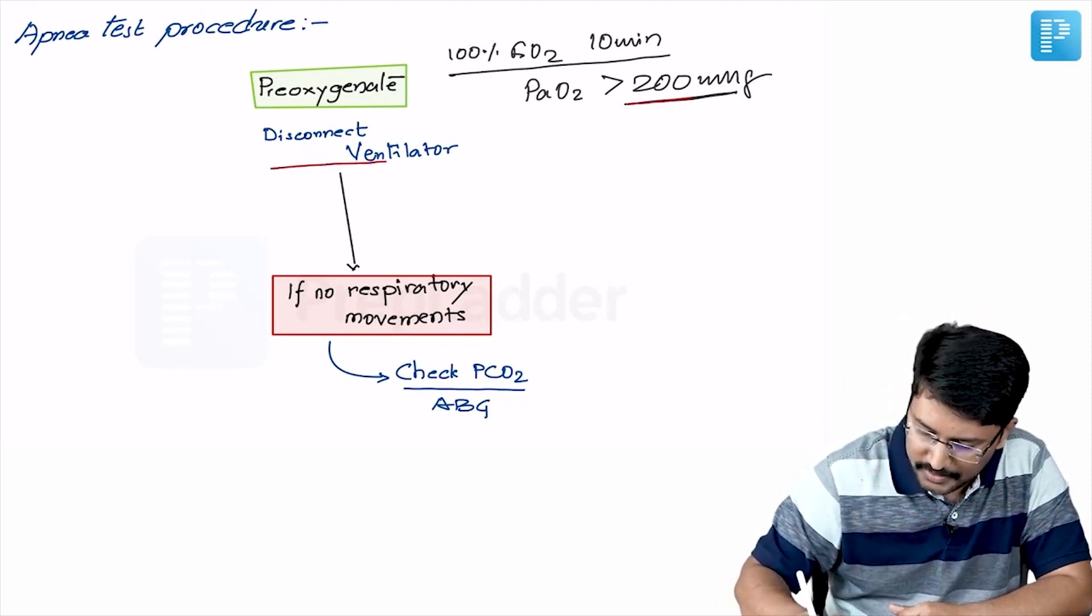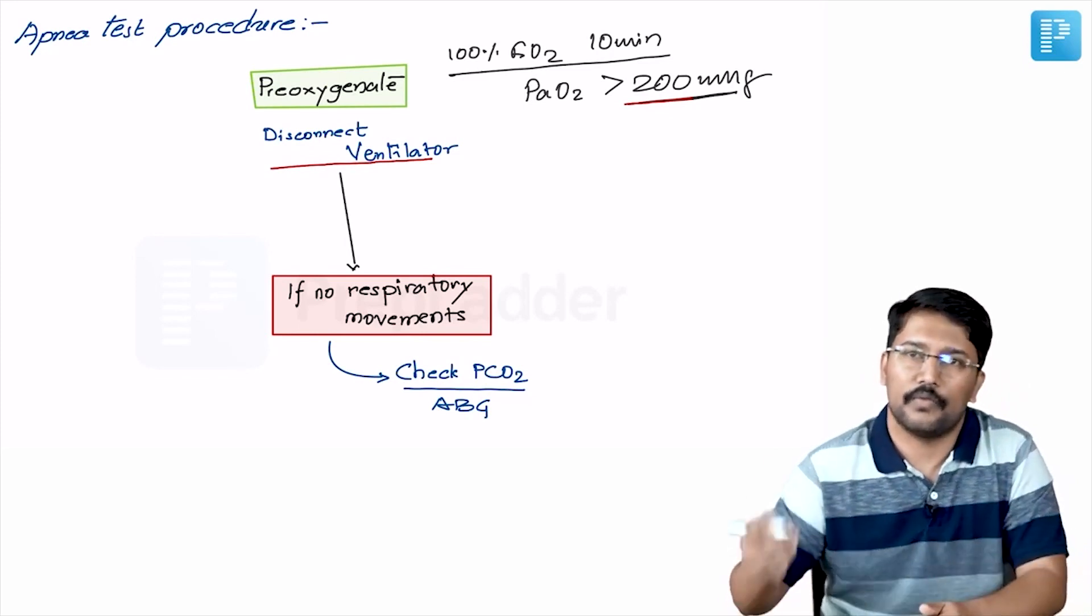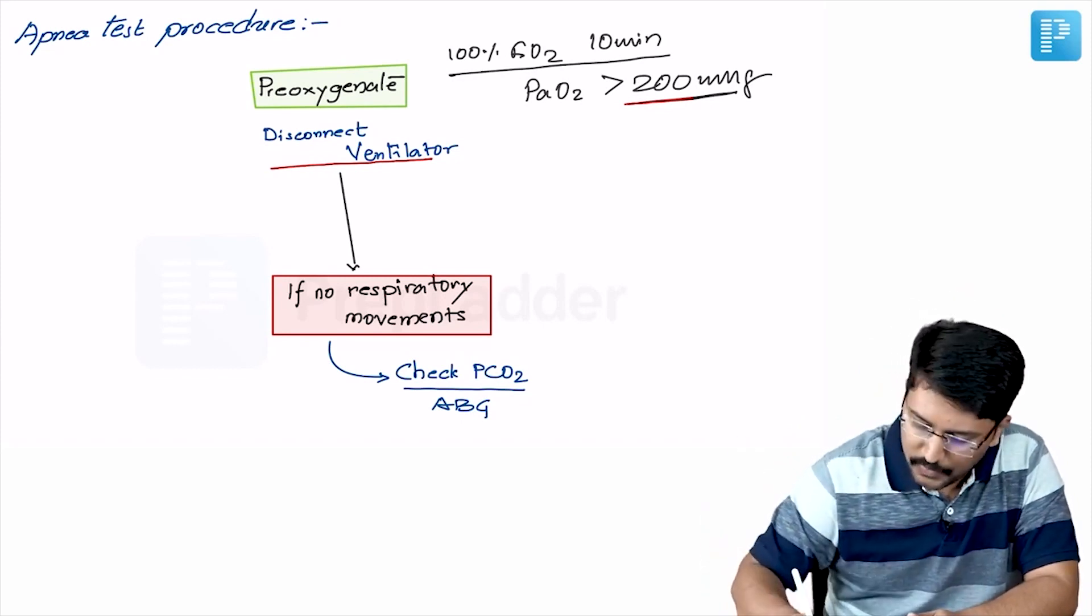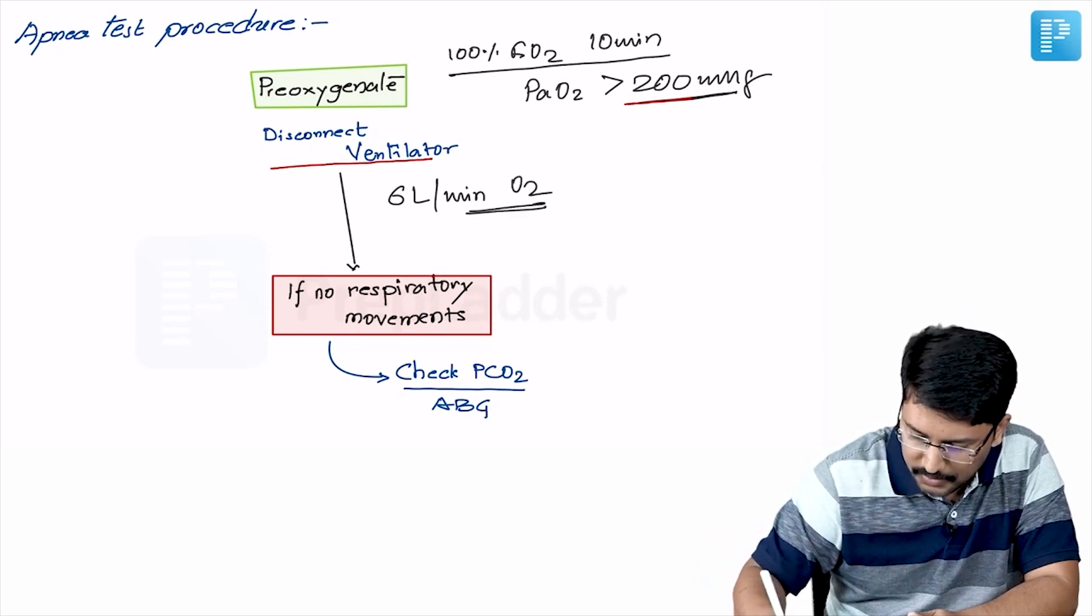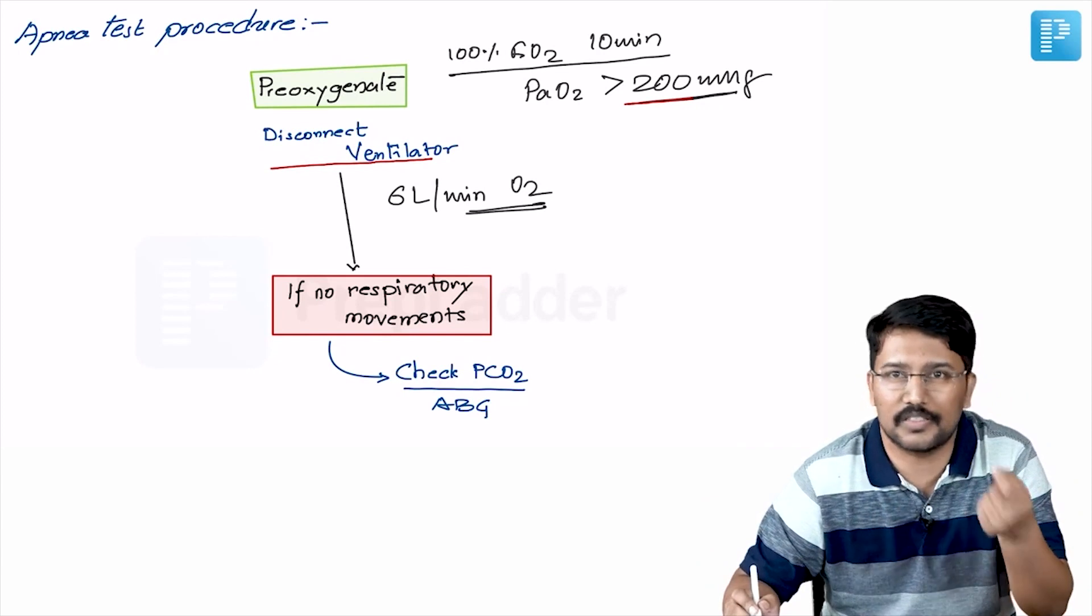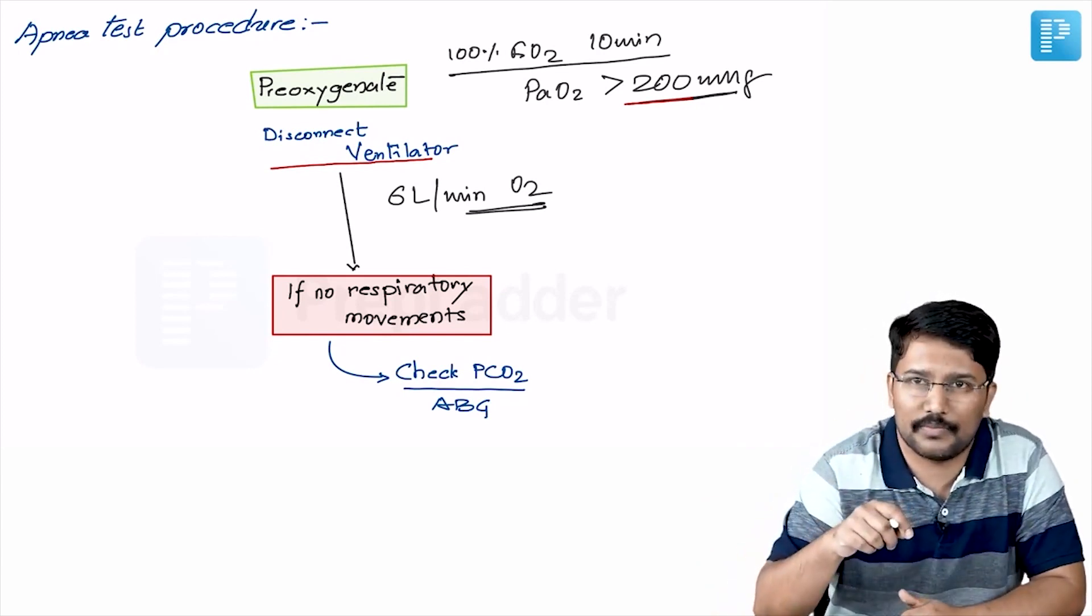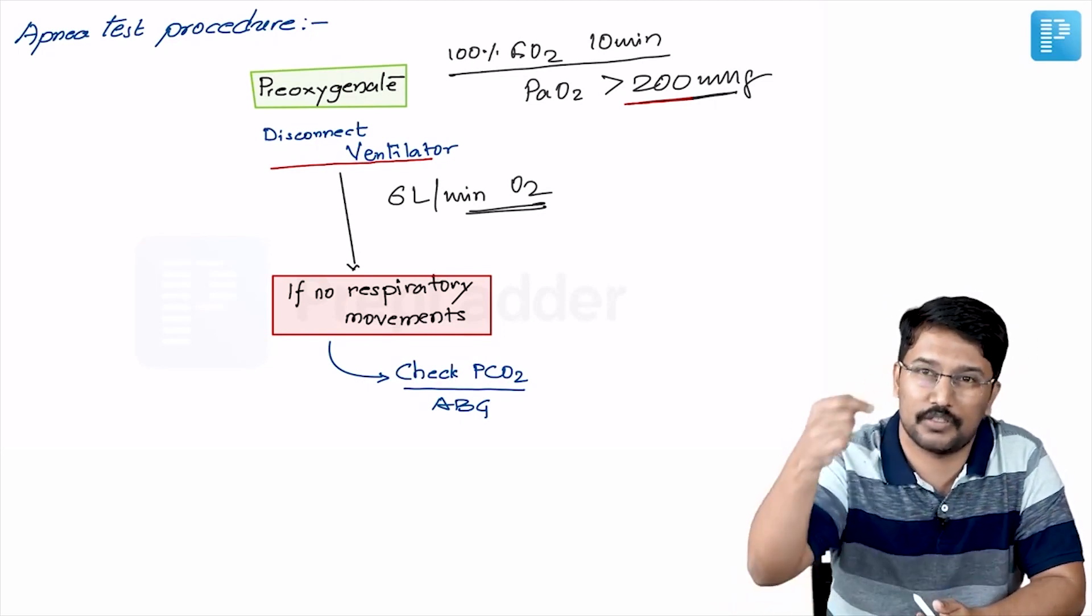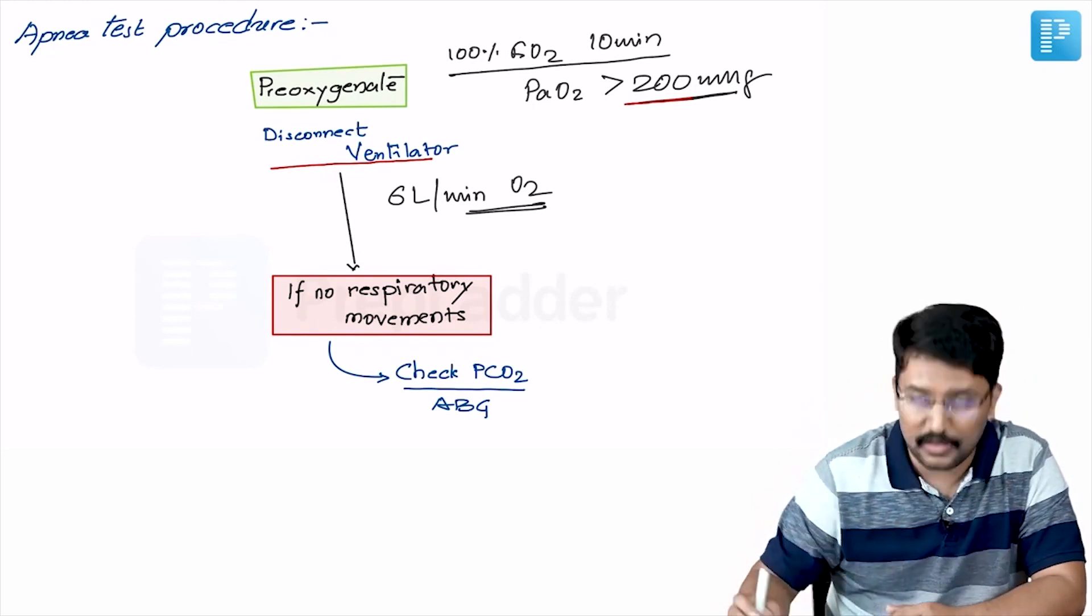Once we achieve this, we disconnect the ventilator, we keep the ET tube, disconnect the ventilator and then we have to continue to oxygenate the patient for the entire duration of test. So we have to give around 6 liter per minute of oxygen to the patient through a nasal cannula or an insufflation catheter inserted into the endotracheal tube reaching up to carina. So we should be able to deliver oxygen almost at the level of carina.